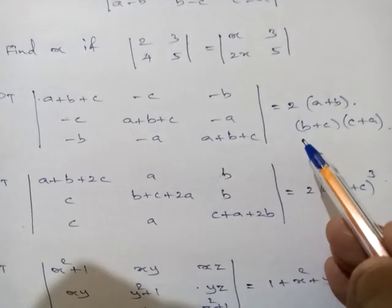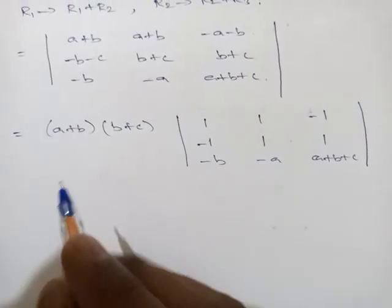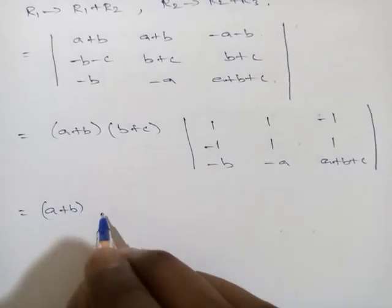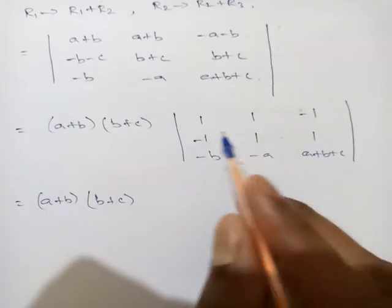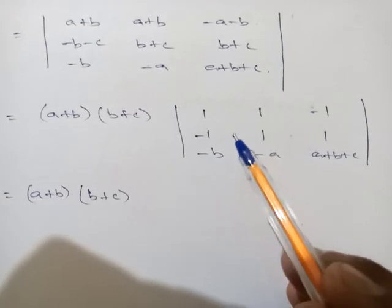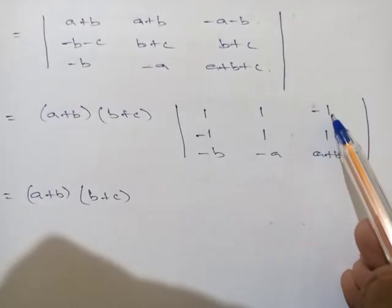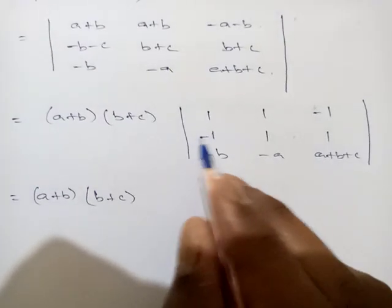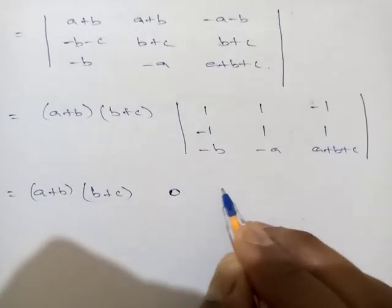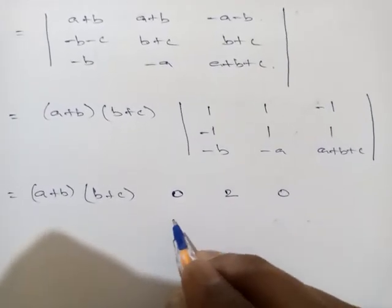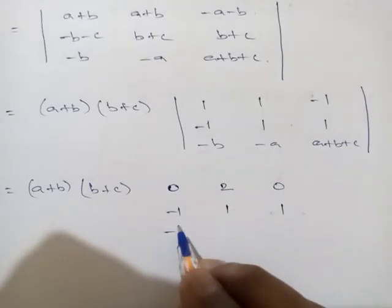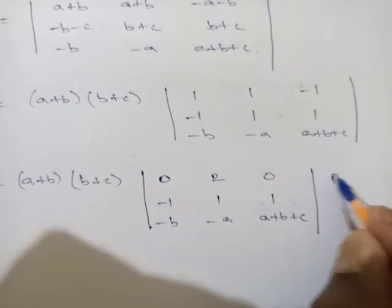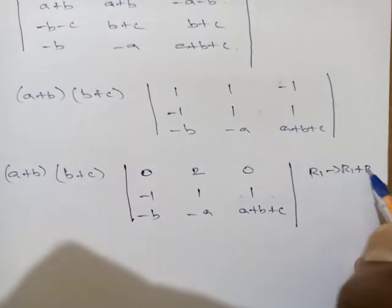Now apply r1 → r1 + r2. Adding rows 1 and 2: 1+(−1)=0, 1+1=2, −1+1=0. So row 1 becomes (0, 2, 0). Row 2 remains: (−1, 1, 1). Row 3: (−b, −a, a+b+c). We have (a+b)(b+c) outside.